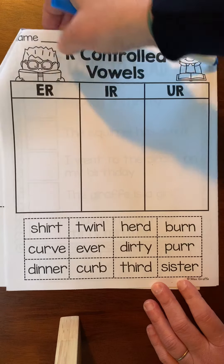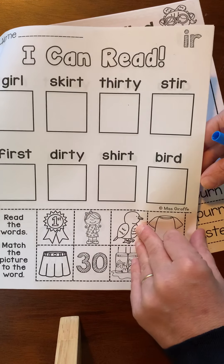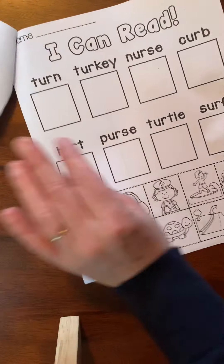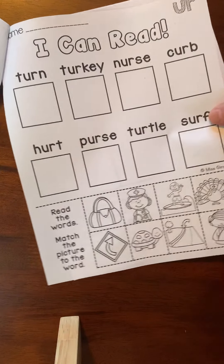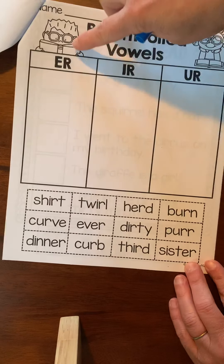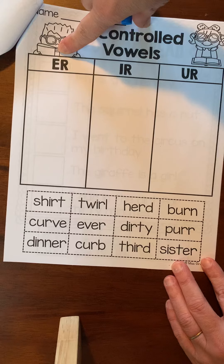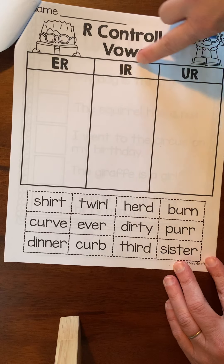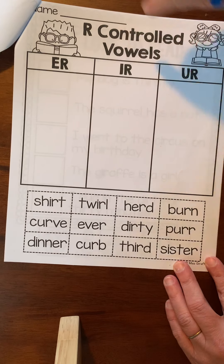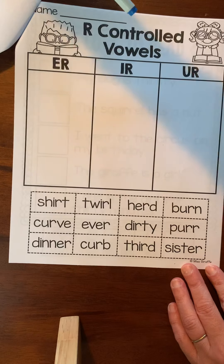Those are your three pages to work on today. You have the I-R page, the U-R page, and finally the E-R, I-R, and U-R page. Remember what these all say? Er, er, er. Go ahead and do those pages. See you next time!